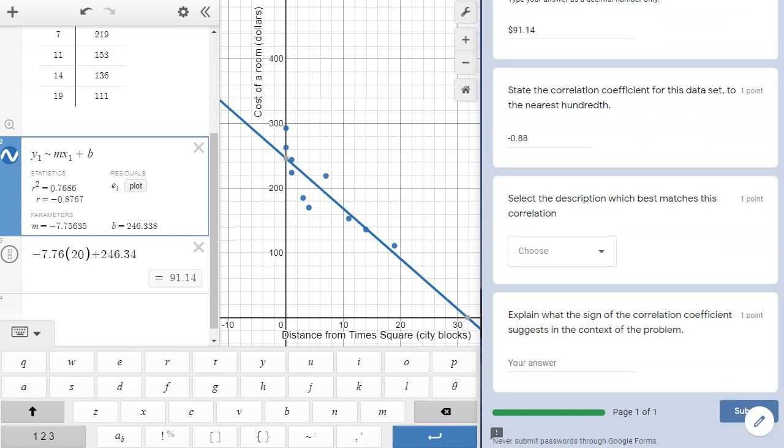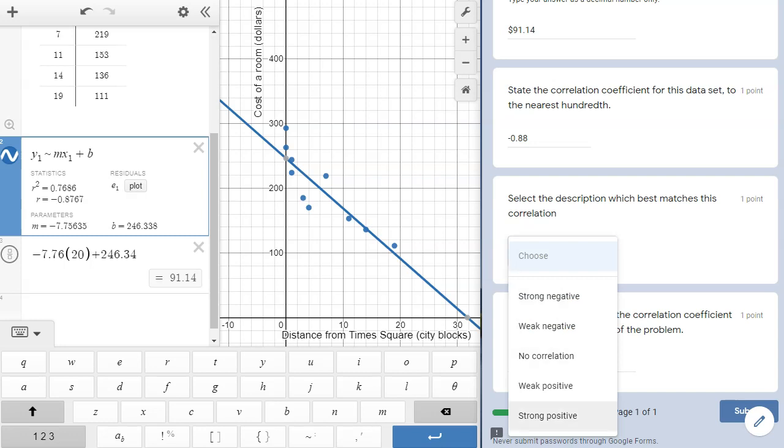Next up, we're asked to select the description which best matches this correlation. Our choices range from strong negative up to strong positive. Well, we can see from our r value that the correlation is definitely negative. Negative .88 is closer to negative 1 than it is to 0, so we'll call this a strong negative correlation.